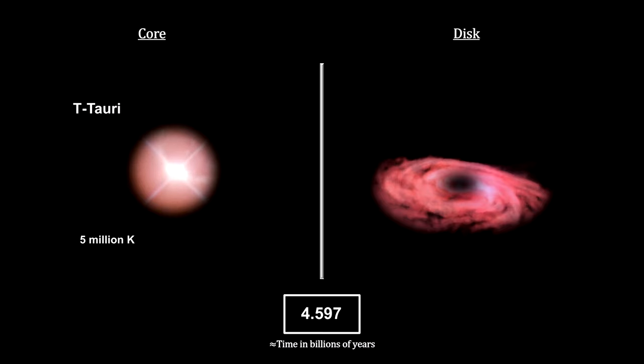During this phase, the disk experienced a growing solar wind from the developing star. This wind started pushing on the lighter gas and dust close to it, forming a snow line beyond which water ice could form. With the Sun at only 5 million degrees Kelvin, this line would be much closer to the star than it is today.